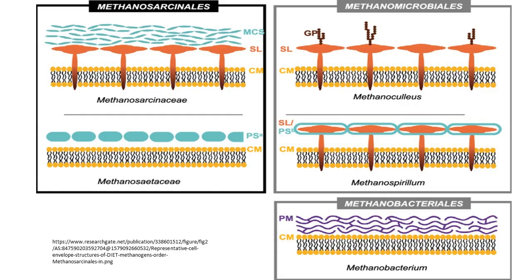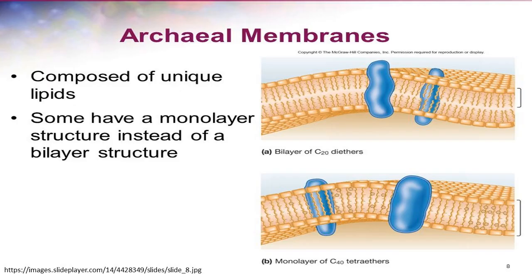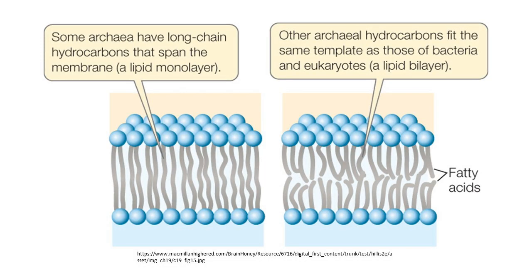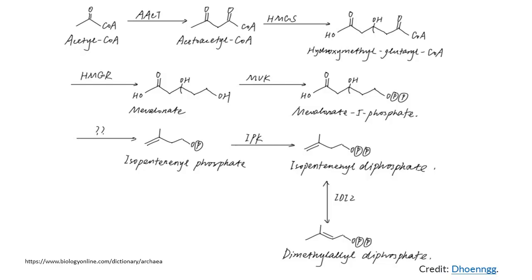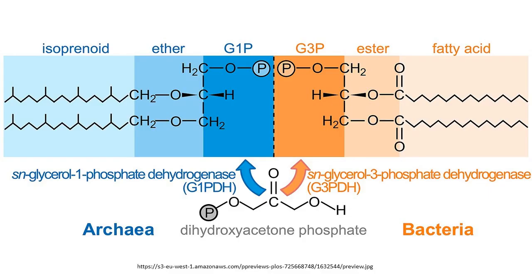A most distinctive feature of archaeobacteria is the nature of their membrane lipids. They differ from both eubacteria and eukaryotes in having branched-chain hydrocarbons attached to glycerol by ether links, rather than fatty acids connected by ester links. Sometimes two glycerol groups are linked to form an extremely long tetraether. Usually the diether side chains are 20 carbons in size and the tetraether side chains are 40 carbons in size. The overall length of tetraethers can be adjusted by cyclizing the chains to form pentacyclic rings and biphenyl rings. They may contain 1 to 4 cyclopentyl rings.